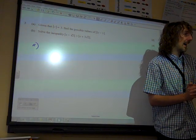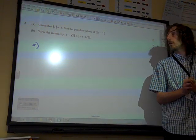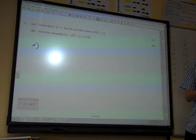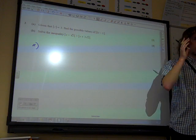So question 3. Given that the modulus of t is 3, find the possible values of 2t minus 1, the modulus of that.